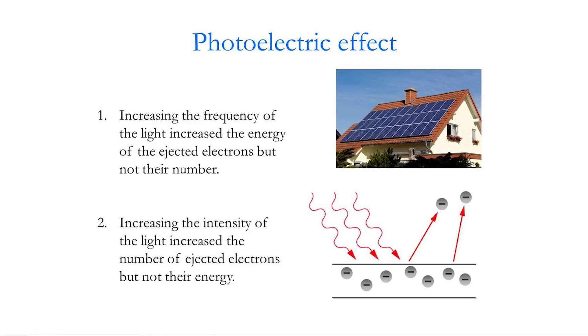Increasing the frequency of the light increased the energy of the ejected electrons, but not their number. And indeed, if the frequency of the light dropped too low, no electrons were emitted. The second puzzle was that increasing the intensity of the light — the amount of light — increased the number of ejected electrons, but not their energy. Very strange behaviour if you look at light from a wave point of view. This should not happen.